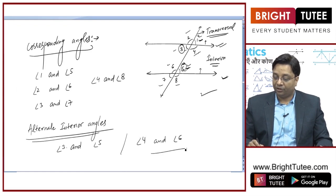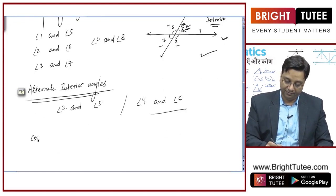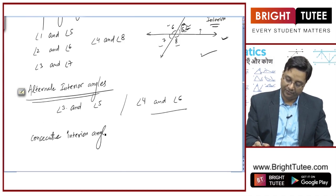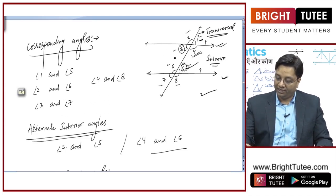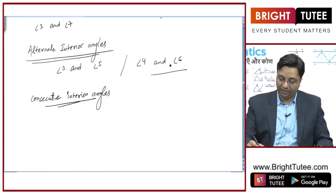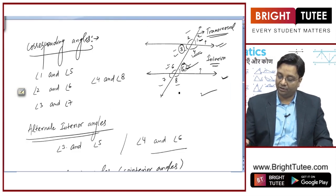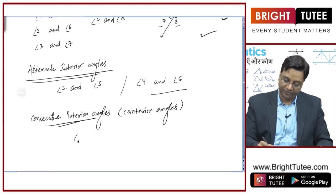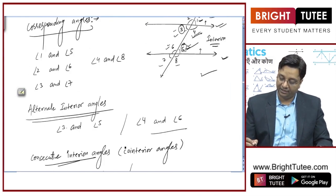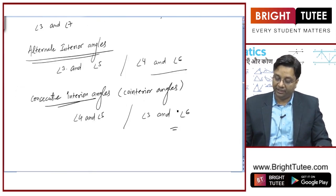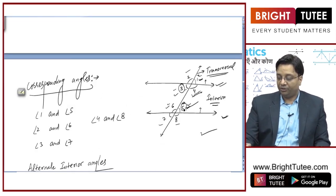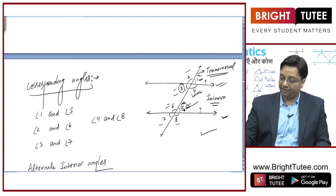Now I will talk about another type of angle, which is consecutive interior angles. Angle 4 and angle 5 are consecutive interior angles. Angle 3 and angle 6 are also consecutive interior angles. These are also known as co-interior angles. So, we have studied corresponding angles, alternate interior angles, and co-interior angles.